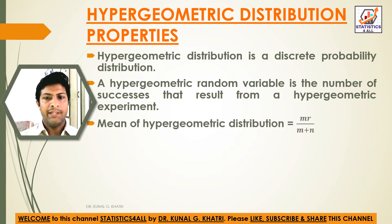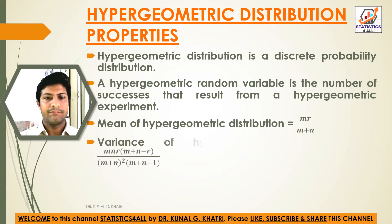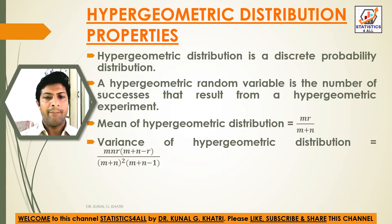Mean of hypergeometric distribution is equal to mr divided by m plus n. Variance of hypergeometric distribution is equal to mnr into bracket (m plus n minus r), whole divided by (m plus n) whole square into bracket (m plus n minus 1).